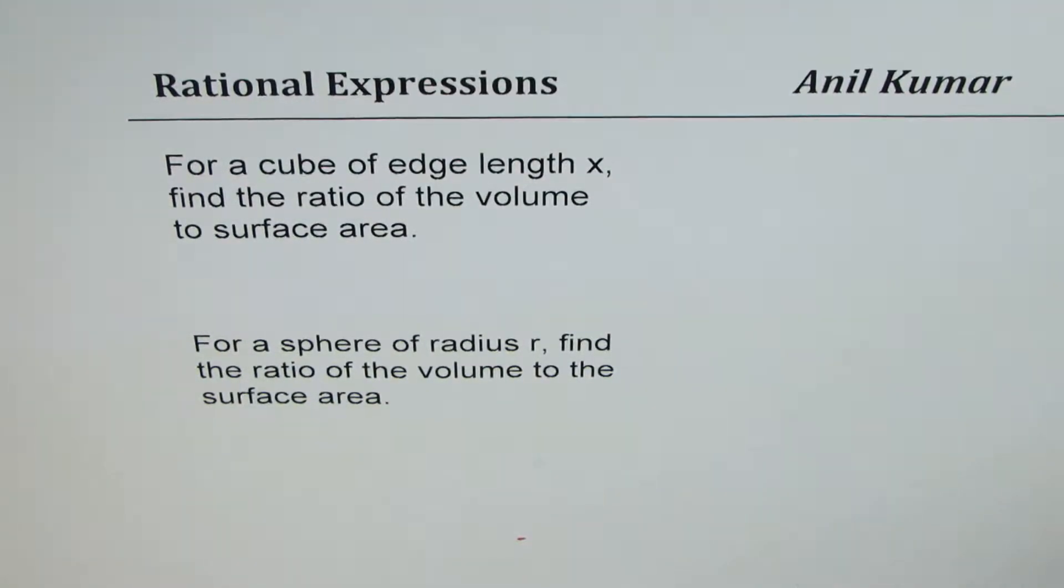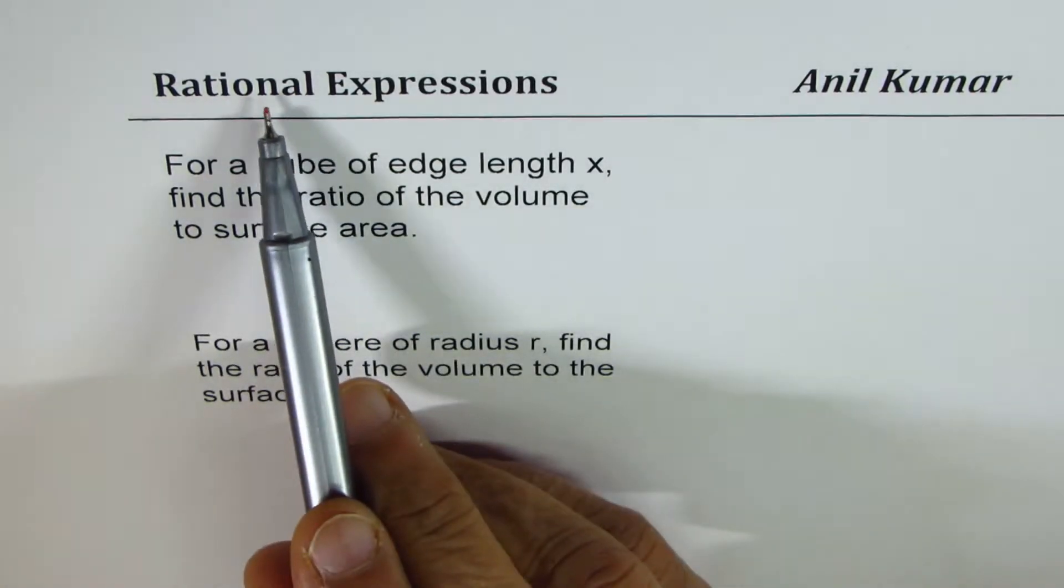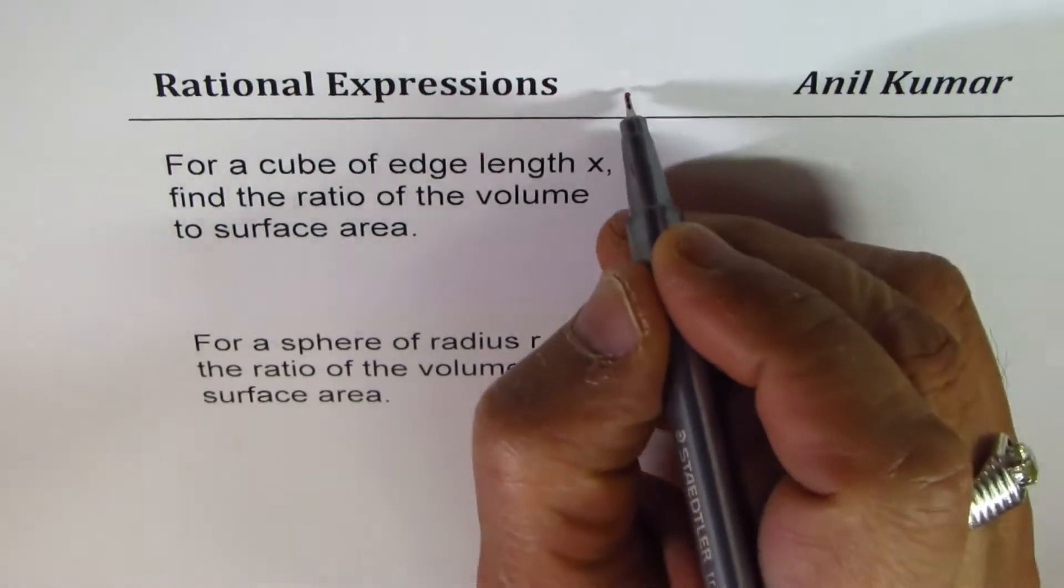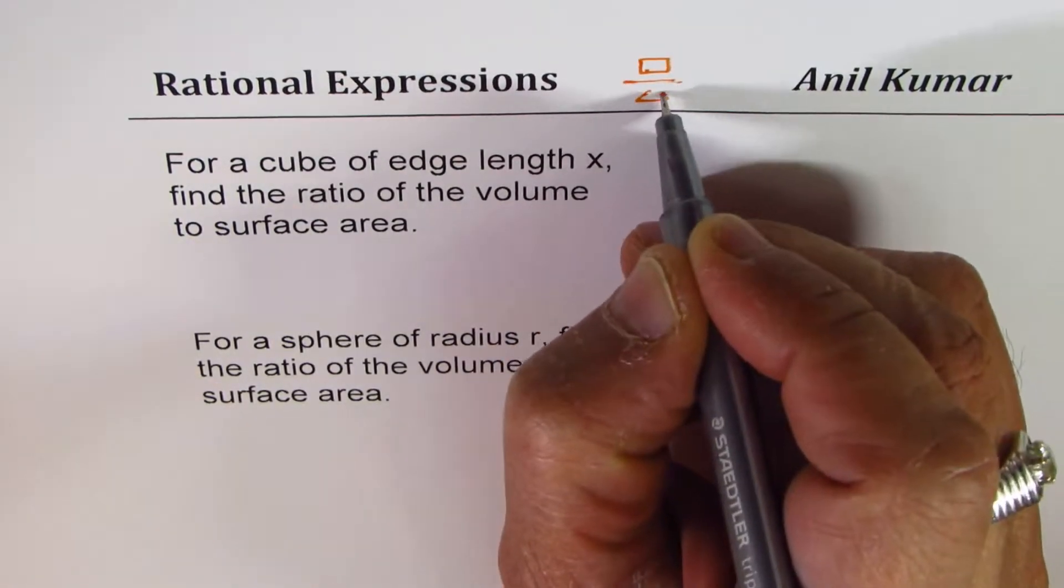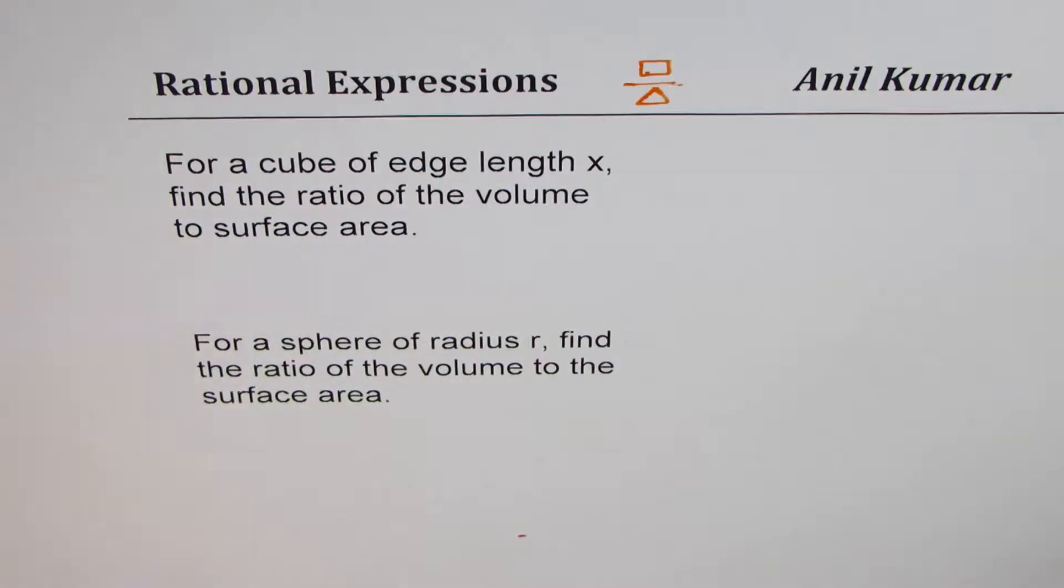I'm Anil Kumar sharing with you an excellent question on rational expressions. Whenever we talk about rational expressions, we have something over something, right? We have something over something that gives us a rational expression. Normally these are polynomials.